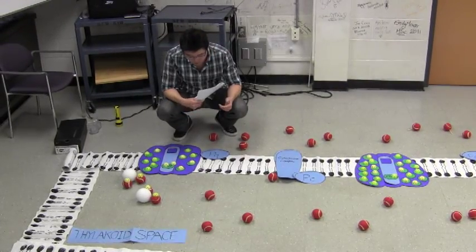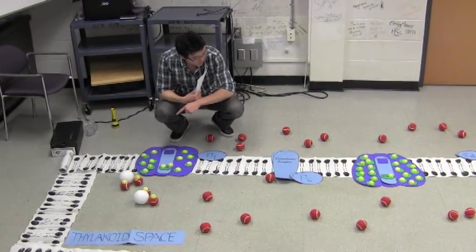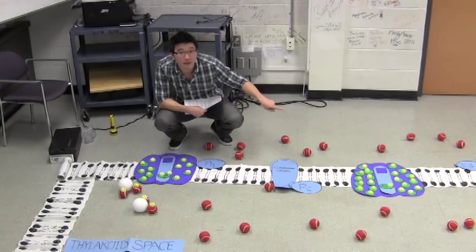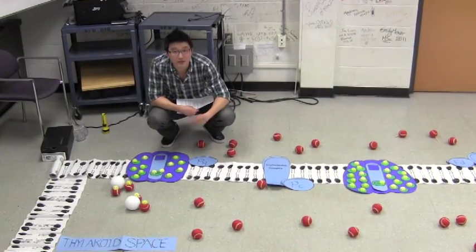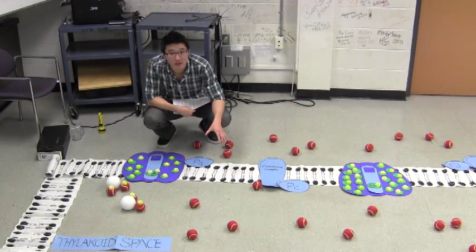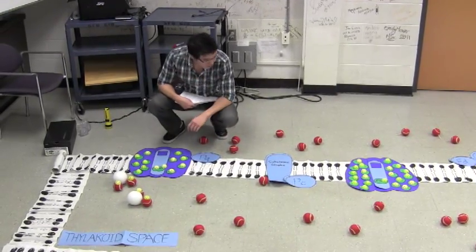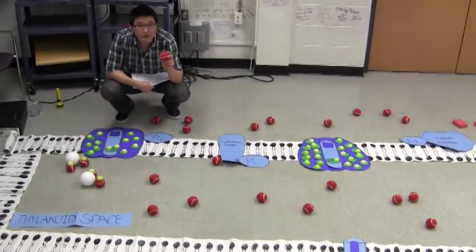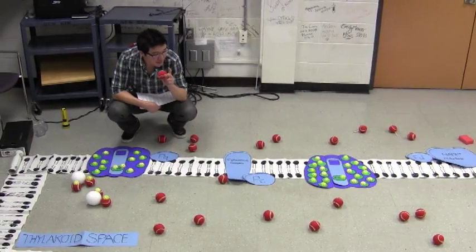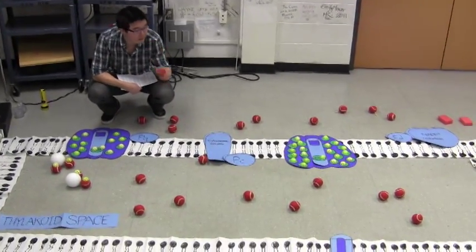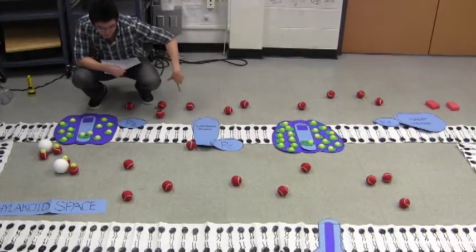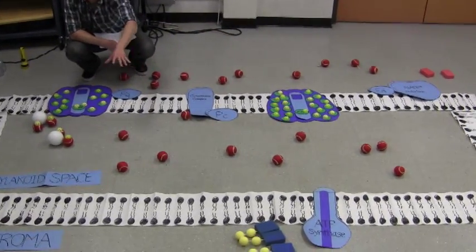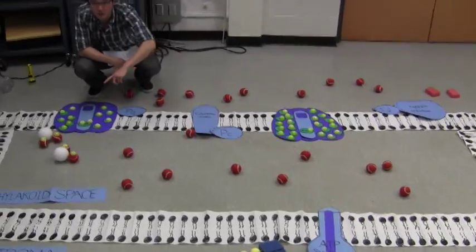What I'm going to do is walk you through the linear electron transport of light reactions two times. The first time I'll explain exactly what's happening. The second time you and your team are going to say out loud what's happening instead. One thing I wanted to point out before we get started is these red balls here are hydrogen ions. You'll notice that right now there's the same concentration of hydrogen ions outside of the thylakoid space in the stroma as inside the thylakoid space. There's 10 hydrogen ions in the stroma, 10 hydrogen ions in the thylakoid space. That's going to change as we do this.